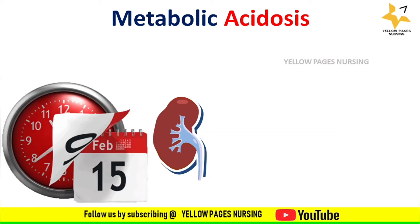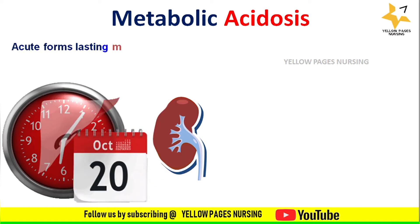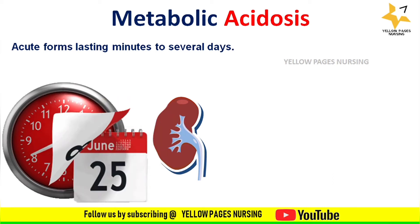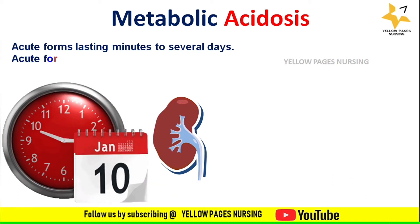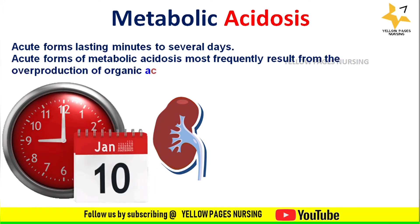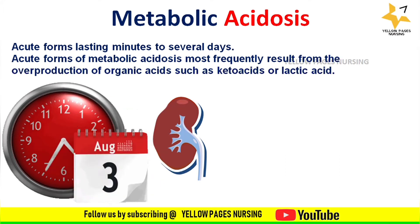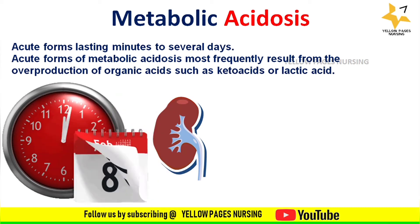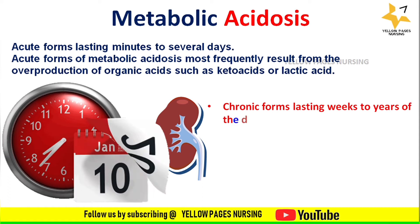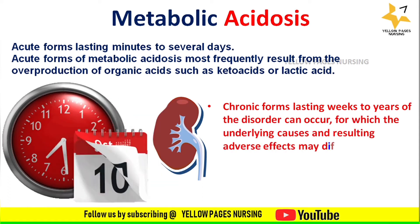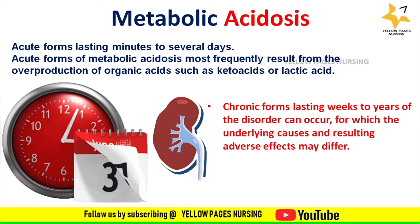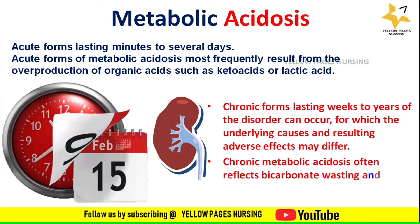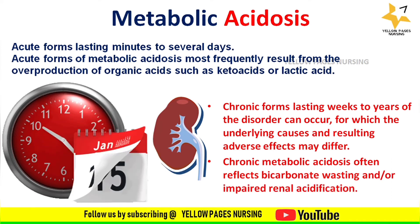Metabolic acidosis may be acute or chronic. Acute forms last from minutes to several days and most frequently result from the overproduction of organic acids such as keto acids or lactic acid. Chronic forms lasting weeks to years can occur, with differing underlying causes and adverse effects. Chronic metabolic acidosis often reflects bicarbonate wasting and/or impaired renal acidification.